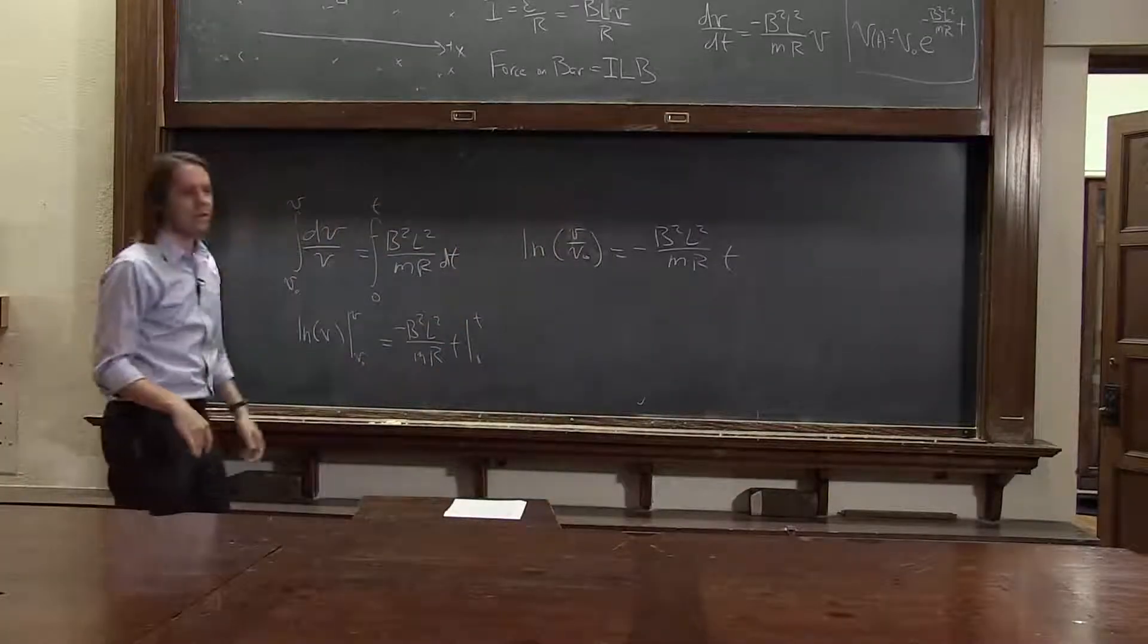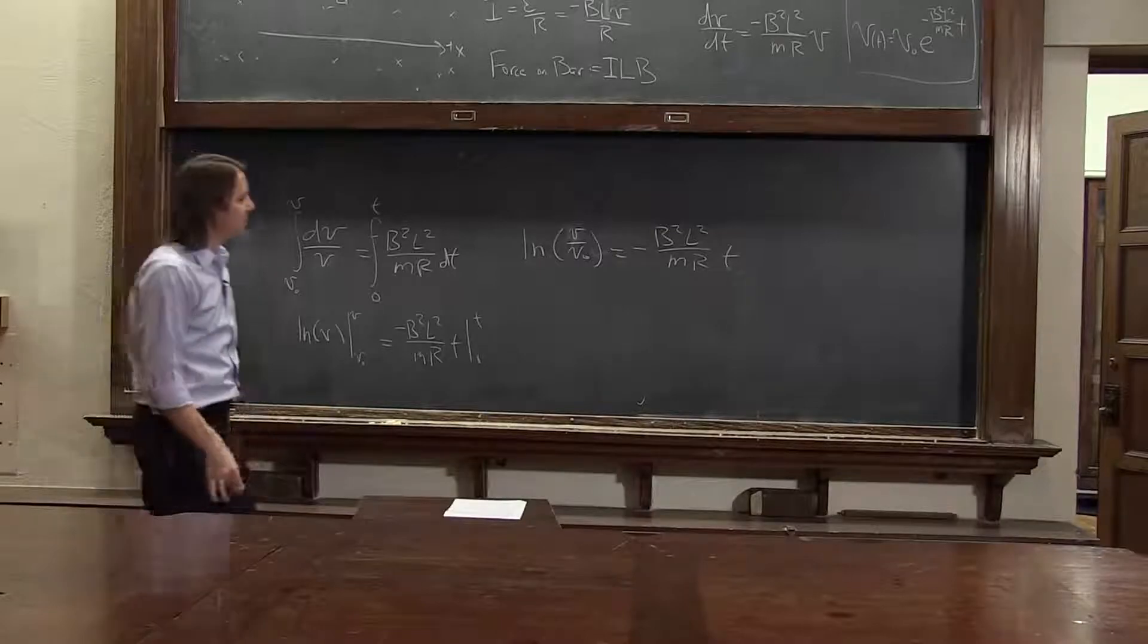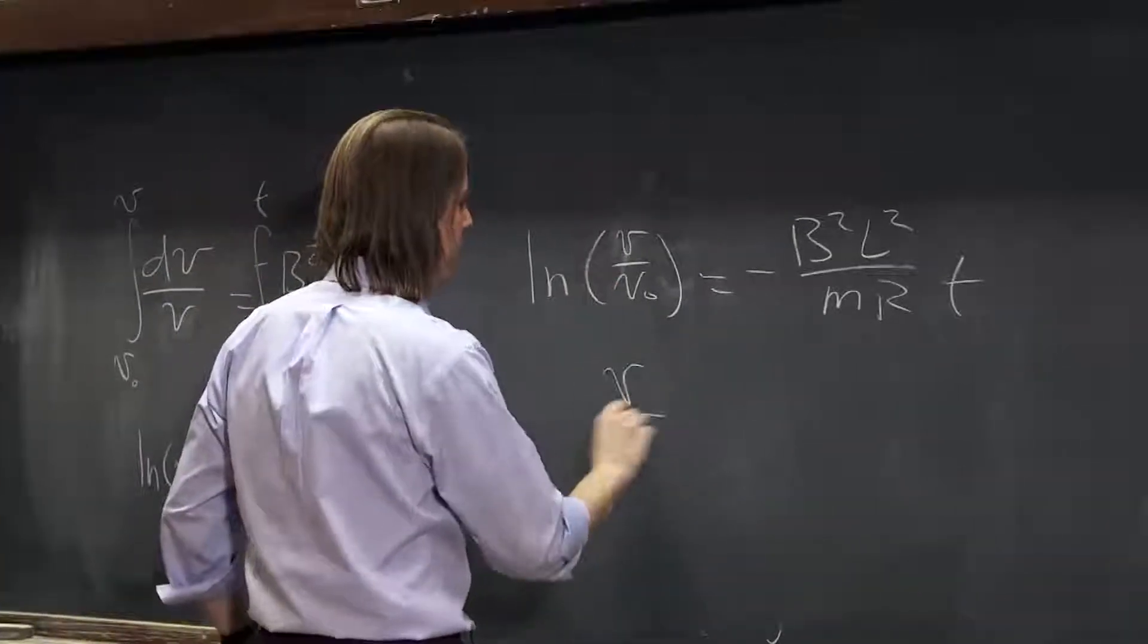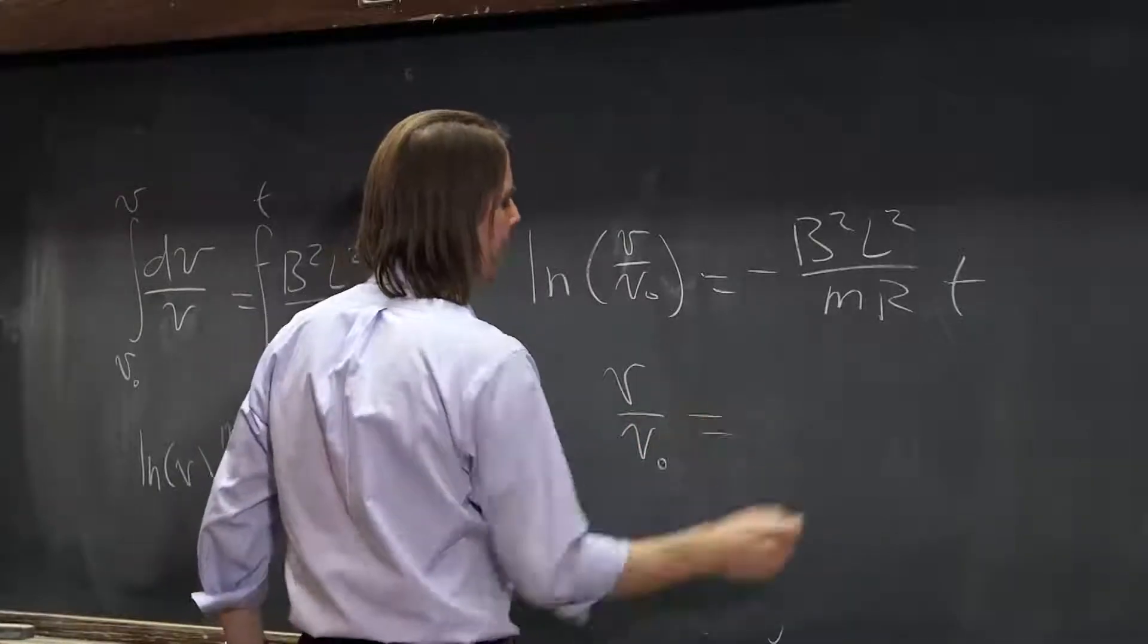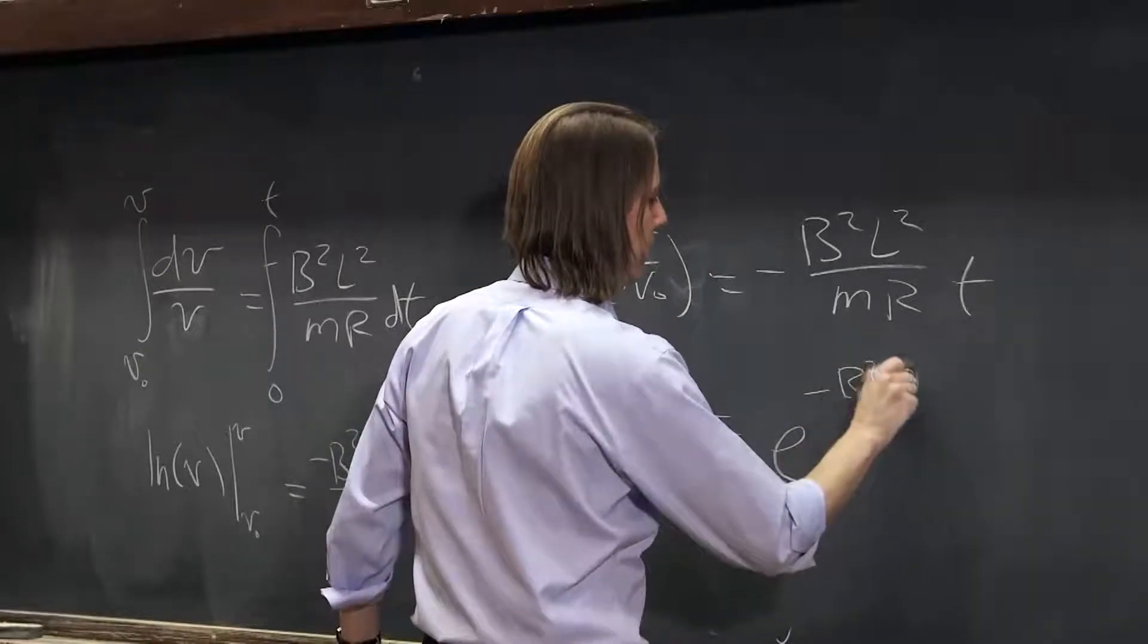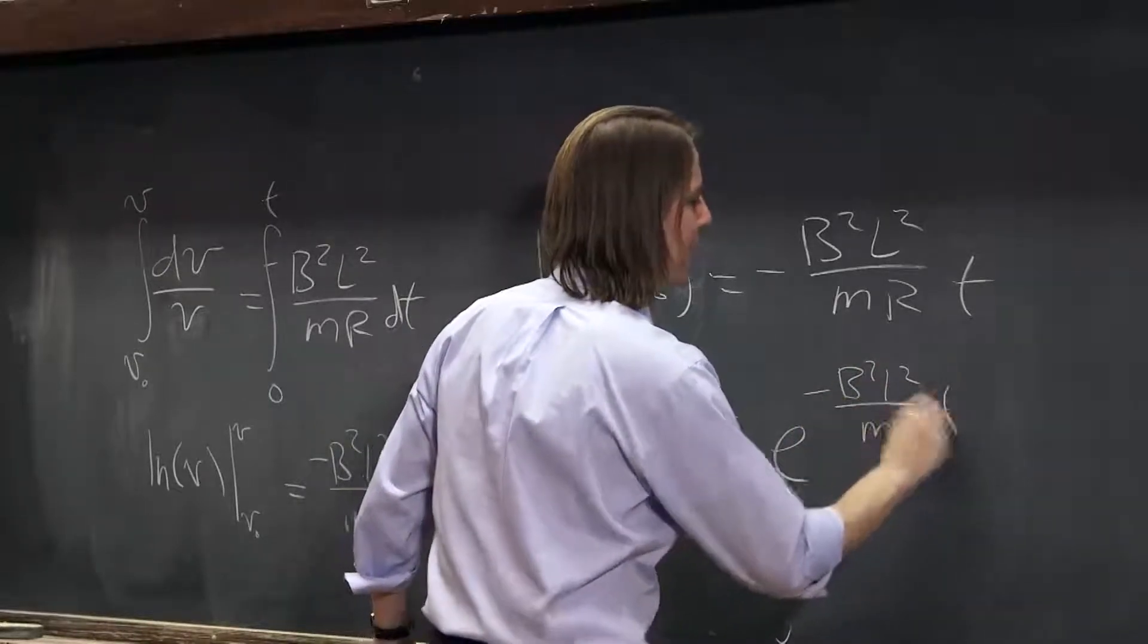And then the thing that you like is under the log, and you don't want that to happen. So you exponentiate both sides. So e to the log of something is the something. V, I'm supposed to be saying log, and I forgot. We talked about that. V over v naught equals e to the minus b squared L squared over m R t.